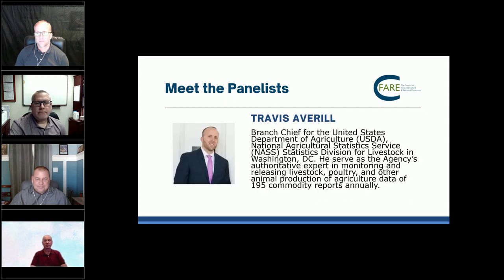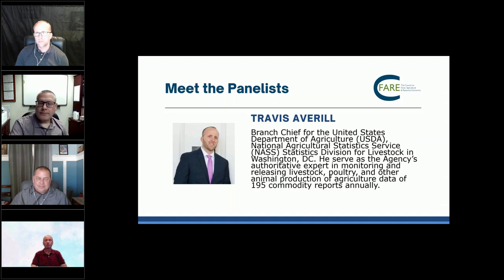Travis Aviril is the branch chief for the United States Department of Agriculture NASS Statistics Division for Livestock in Washington, D.C. He serves as the agency's authoritative expert in monitoring and releasing livestock, poultry and other animal production agricultural data of 195 commodity reports annually. Travis is the subject matter expert in livestock, dairy, poultry, other animal products and associated prices.